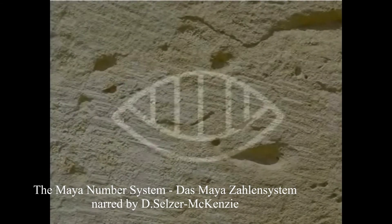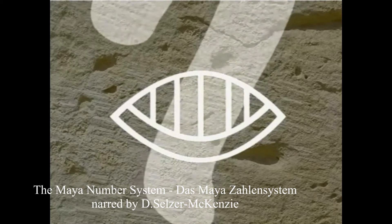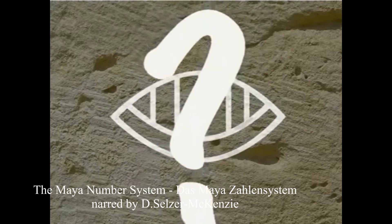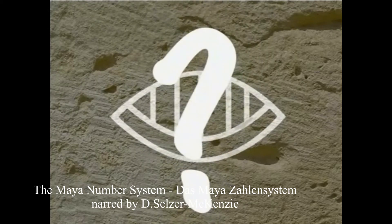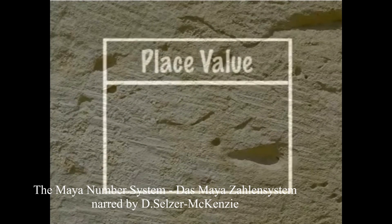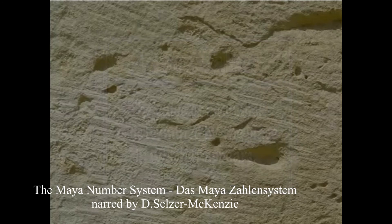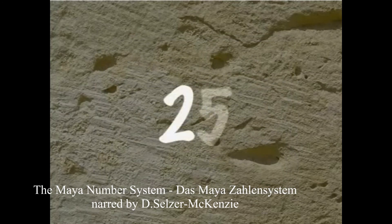That the Maya had invented a symbol for 0 is probably the most important aspect of their mathematical system. You may wonder what is so important about the number 0. To answer that question, let's take a look at our Hindu-Arabic system again. When we write down numbers, we rely on place value. This means that the value of a number is determined by the place in which it appears.